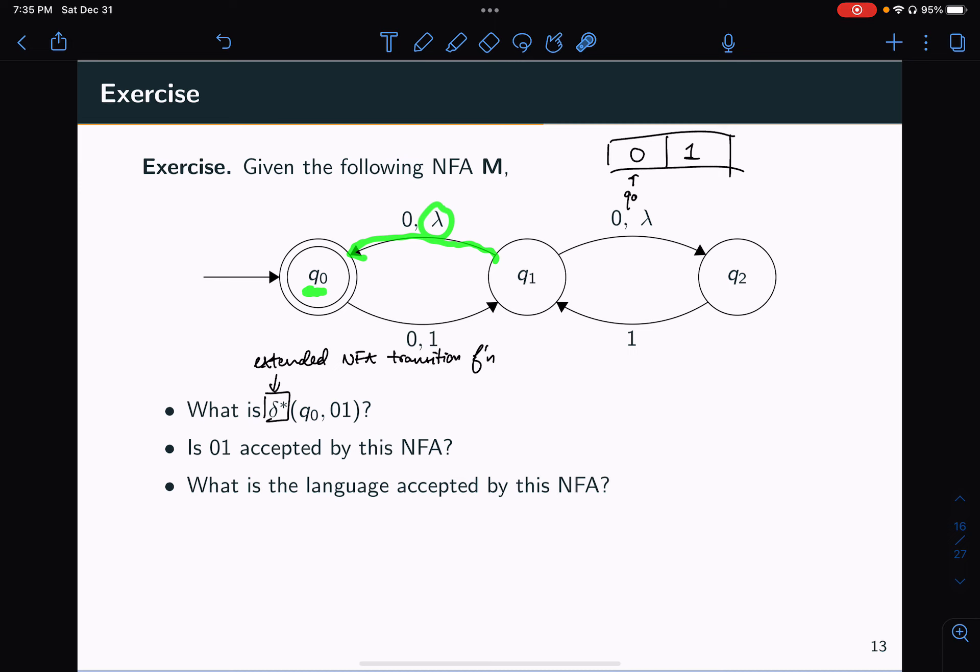So now I'm back at Q0, and I've read this zero, and now I'm trying to read a one. So from this Q0, now I can read the one and go back to Q1. So if that went in a bit too fast, you can just think of it as starting at Q0. So this is the start. Then I read the zero, so I go to Q1. Then I use a lambda transition to go back to Q0. Then I actually read the one to go back to Q1.